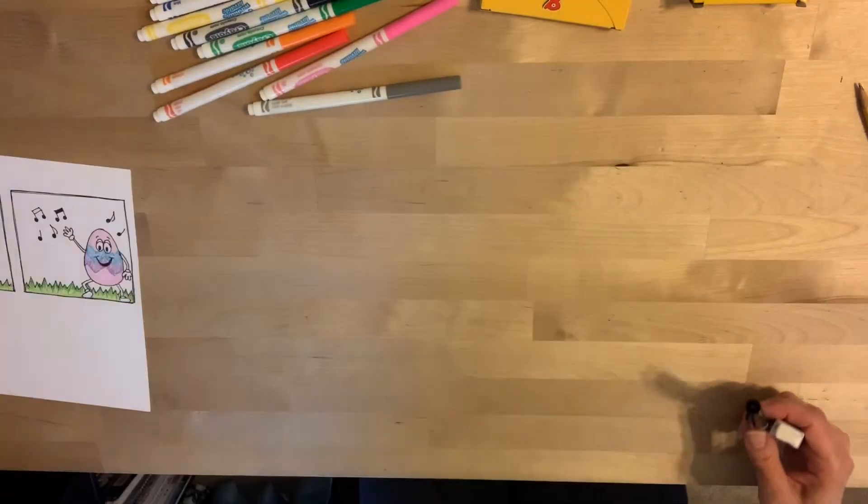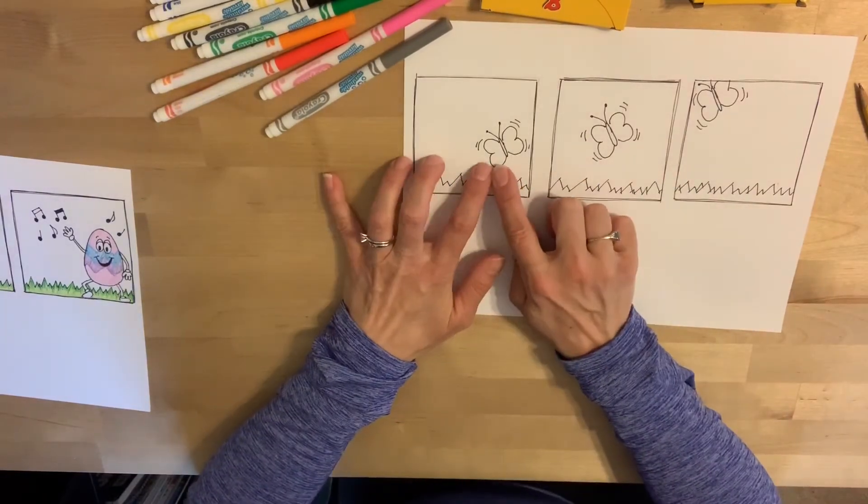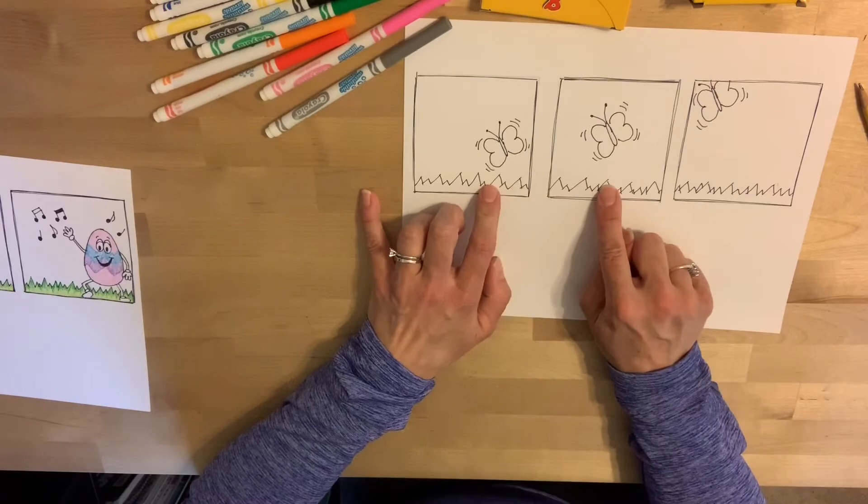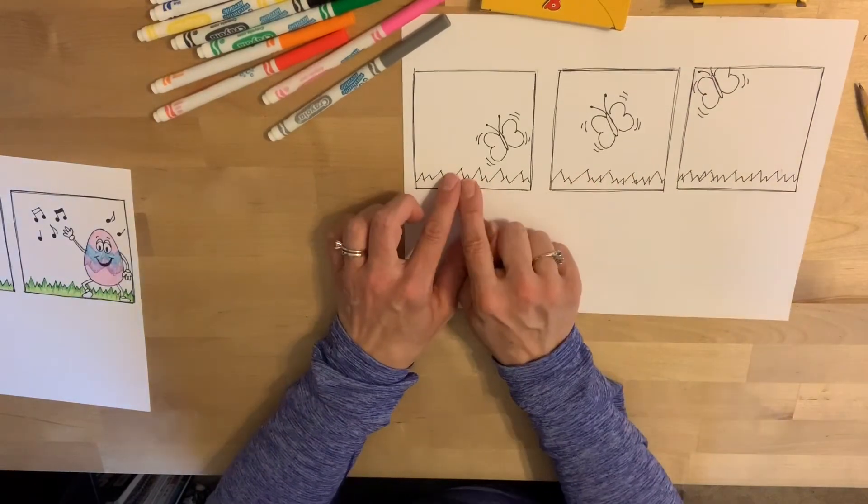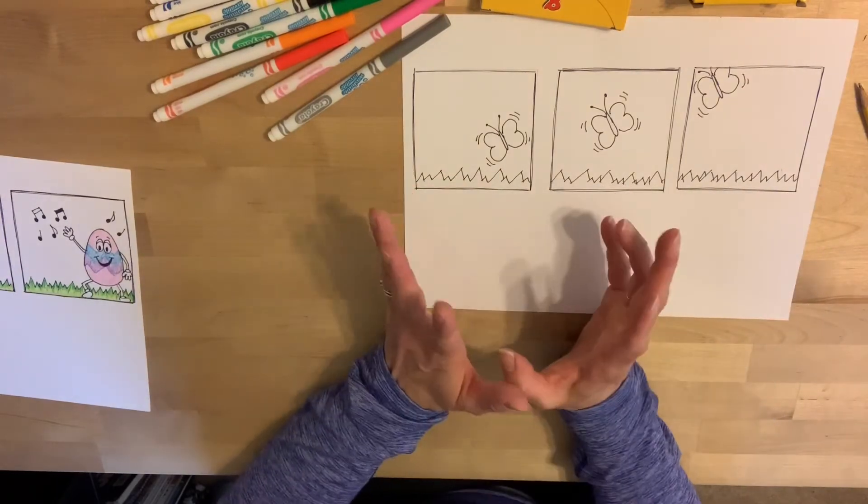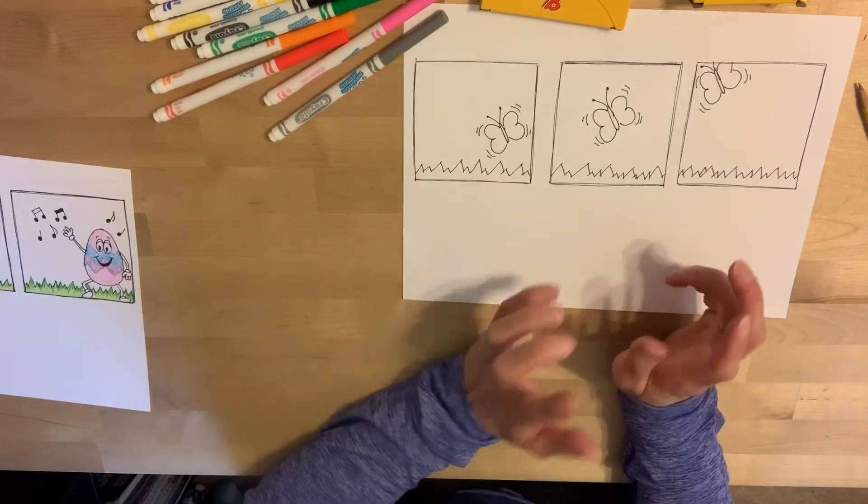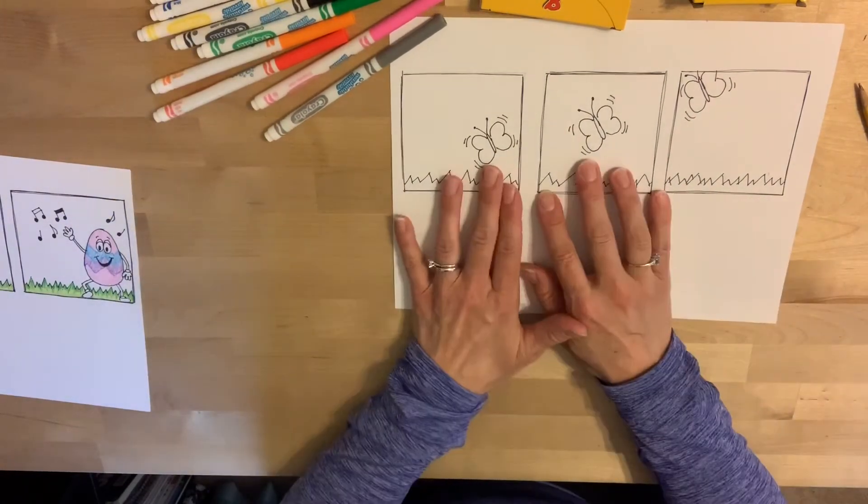And the important thing to do with that is, whatever color you color each item in the first frame, make sure that you color the same item, the same color, in every frame. Because we want all of these frames to look like they're at the same spot at the same time. They're all happening at the same time. If they change color, it looks like they're not quite happening all at the same time.